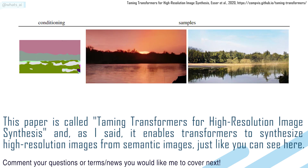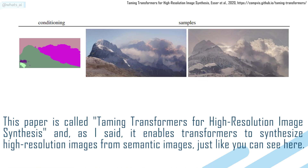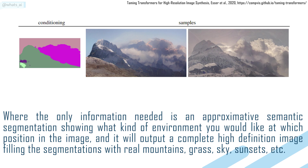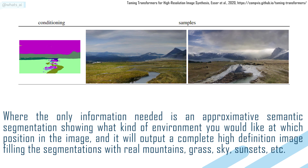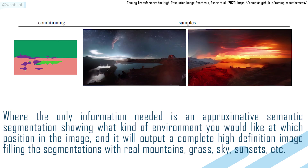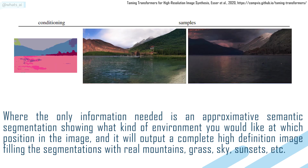It enables transformers to synthesize high-resolution images from semantic images, just like you can see here, where the only information needed is an approximate semantic segmentation showing what kind of environment you would like at which position in the image. It will then output a complete high-definition image filling the segmentations with real mountains, grass, sky, sunsets, etc.